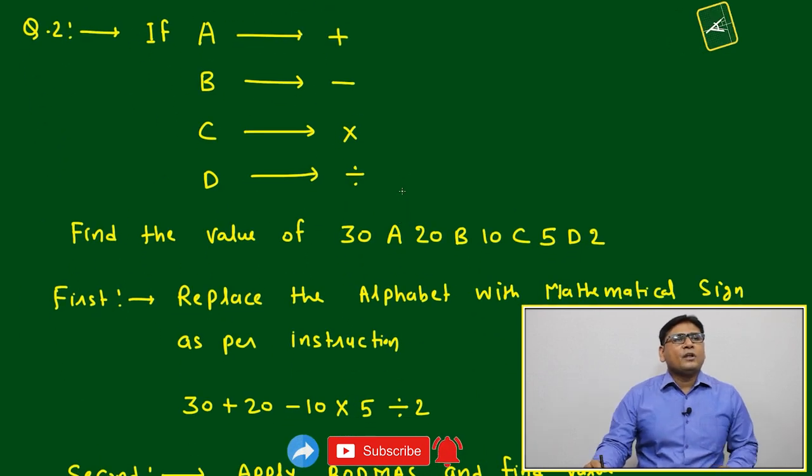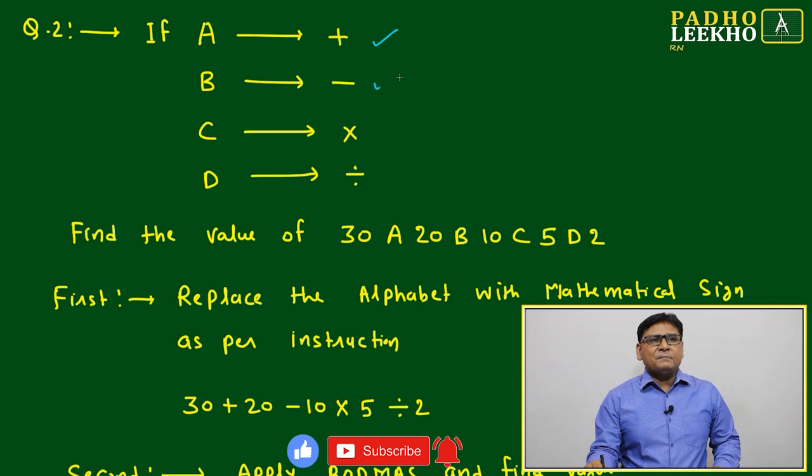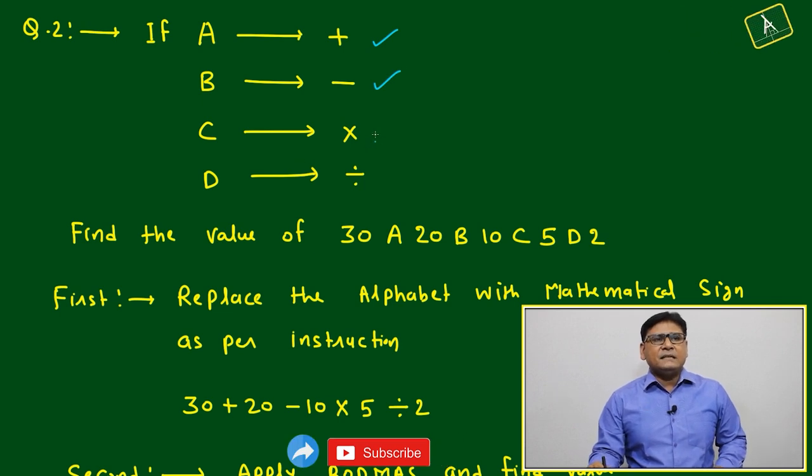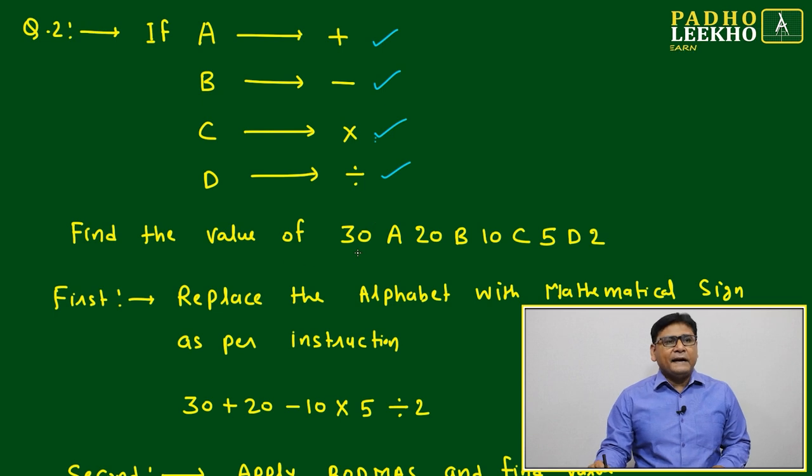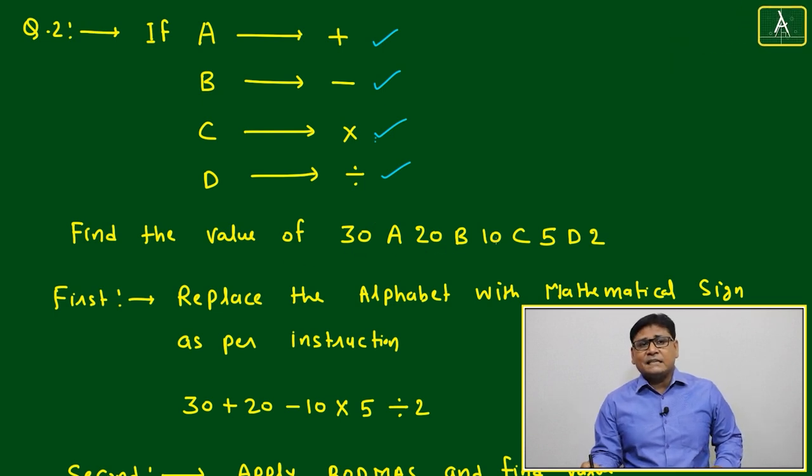Question number 2, if A represent addition, B represent subtraction, C represent multiplication and D represent the division, then find the value of 30 A 20 B 10 C 5 D 2.